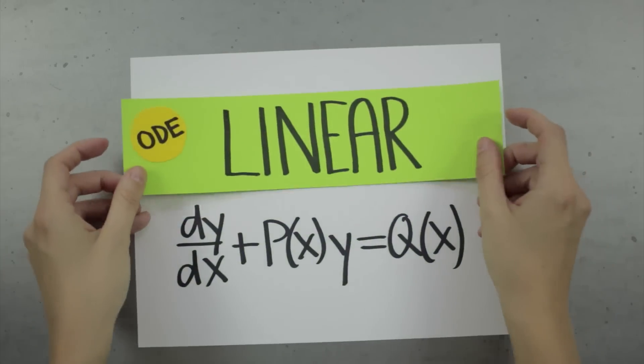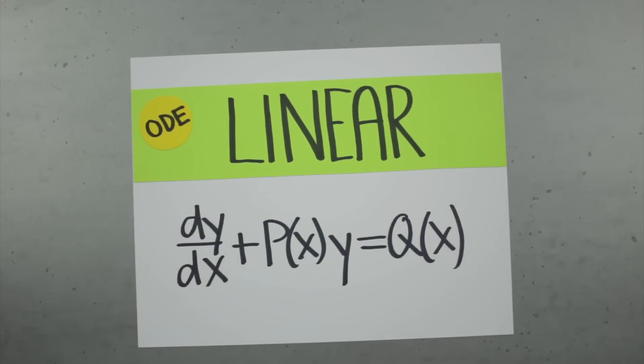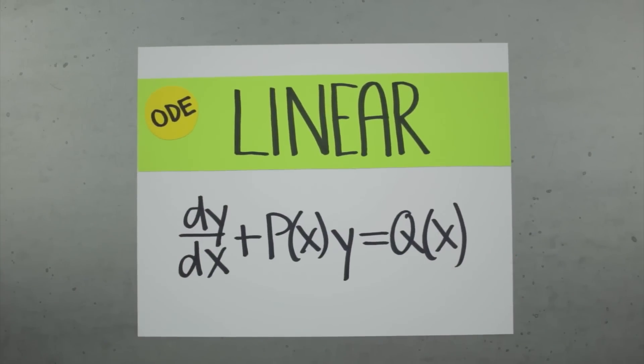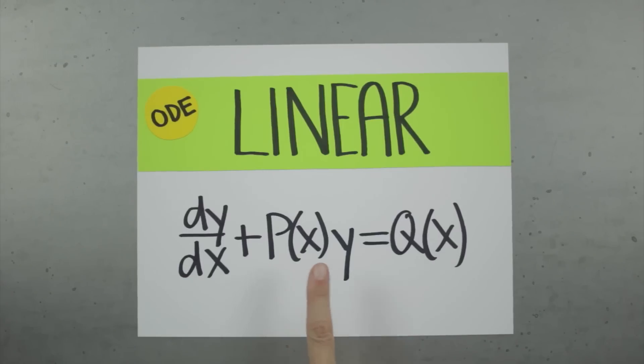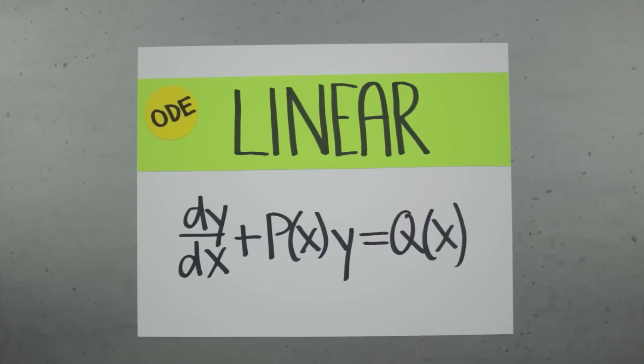Now let's talk about different types of ordinary differential equations. Linear, separable, and exact differential equations are all ordinary differential equations. You can have first, second, or higher order differential equations for each of these types, but let's just focus on the first order functions. A first order linear differential equation looks like this. You might have an equation that is in fact a linear differential equation and doesn't look exactly like this, but can be manipulated into this exact form. If you can get your equation into this form, where you have the derivative here by itself, a function of x multiplied by y here, and then a function of x over here, then it's a linear differential equation.